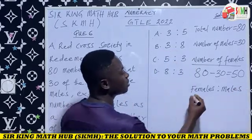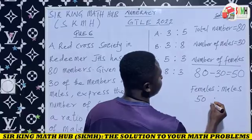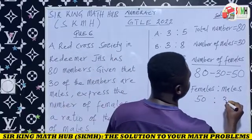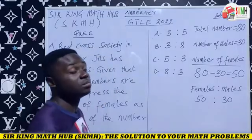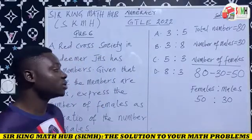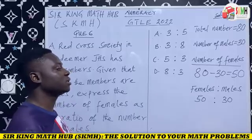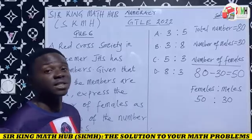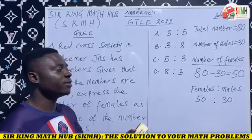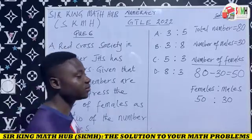We know that there are 50 females and 30 males, so the ratio of females to males in this society is 50 is to 30. Note that 50 is to 30 can also be written as a common fraction.